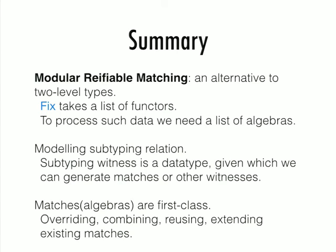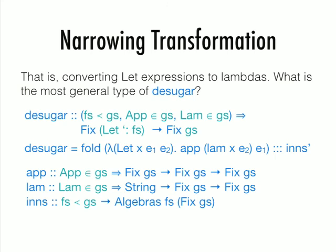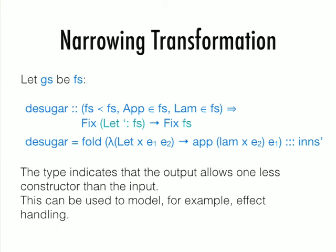In summary, our library, modular reifiable matching, is an alternative to data types a la carte, where we use a list of functors and a list of algebras. We think that the advantages are: firstly, our algebras are first class, the matches are first class which can be manipulated, and also we have a more flexible subtyping relation. We can say that this list of algebras is a subtype of, is a sublist of, the other list of algebras. This is how we denote that the output list of algebras is smaller than the input algebra. In this case we use the precision. This is an example where we remove Let from the input expression. In the beginning I tried to use that to model effect handling, but that became a minor example in our paper. That's all I'm going to talk about today.